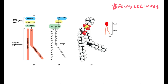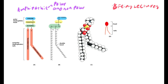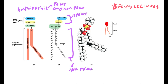Phospholipids are actually amphipathic, meaning they are both nonpolar and polar. They have a polar head — that region is polar — but then they have a nonpolar body. When you combine these parts together, they make an amphipathic molecule, which is the phospholipid.